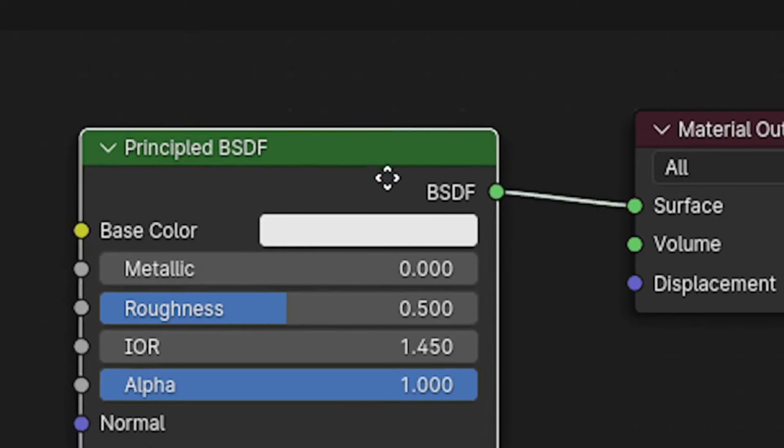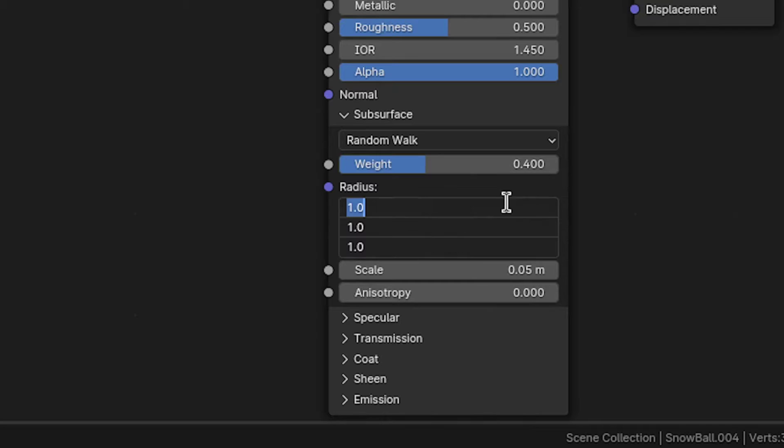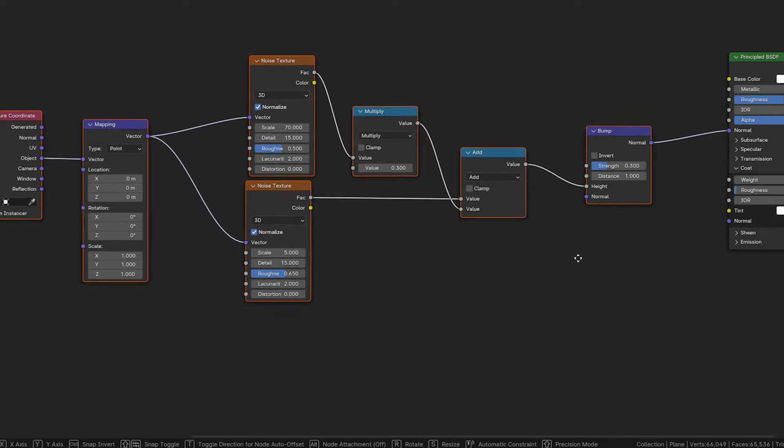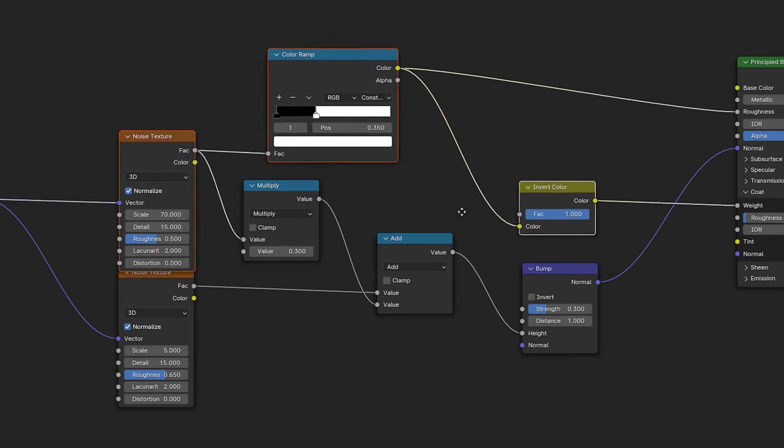But now onto the snow material. This is going to be very simple. Just add a Principled BSDF, give it a white color and some subsurface scattering. And we don't want it to look like skin, so give it a radius of 1-1-1 as well. Now to add more detail to the snow, add this setup here for the bump and this one here for that glittery snow sparkle. Then just apply the material to all the snow in the scene. And that's done.